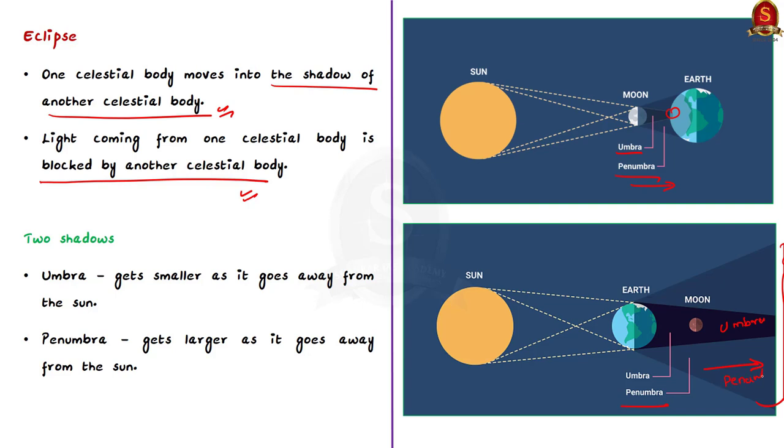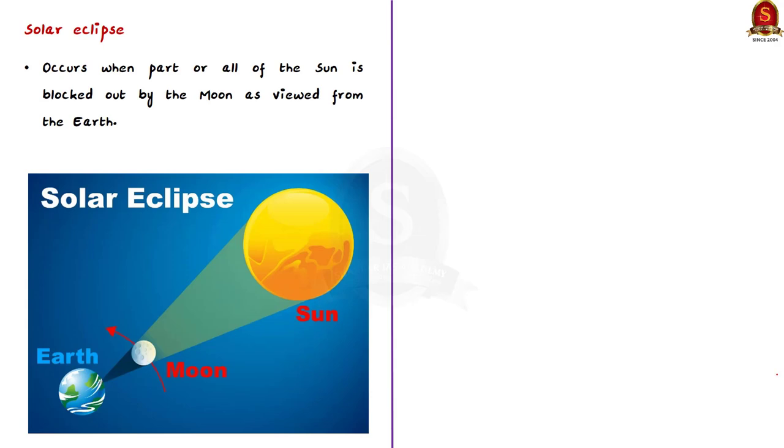First, let us see what is a solar eclipse. A solar eclipse occurs when part or all of the sun is blocked out by the moon as viewed from earth. This is how solar eclipse occurs. Here you can see the moon is blocking the sun's rays from reaching the earth.